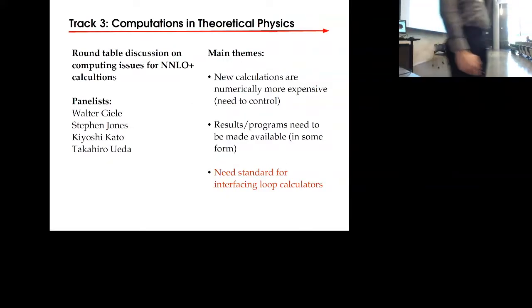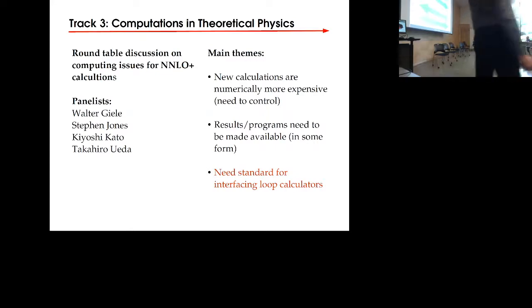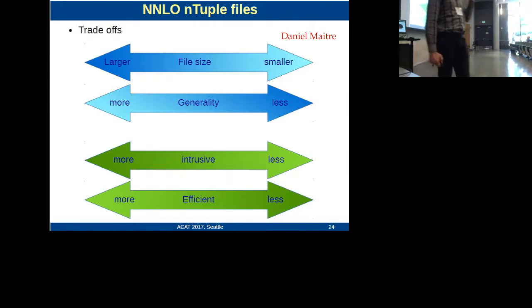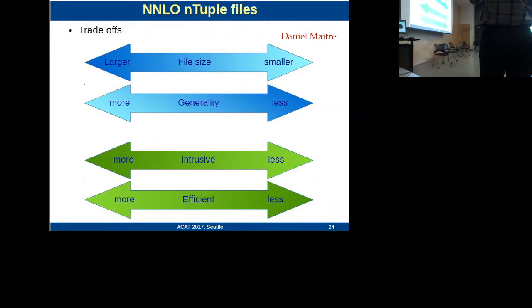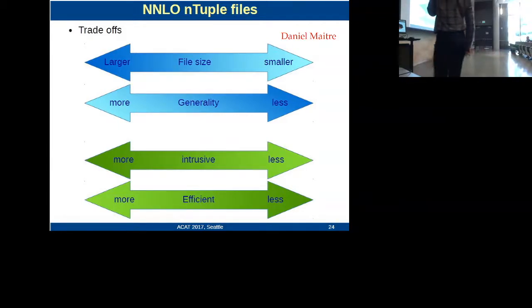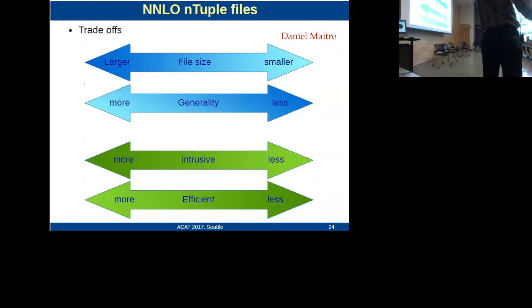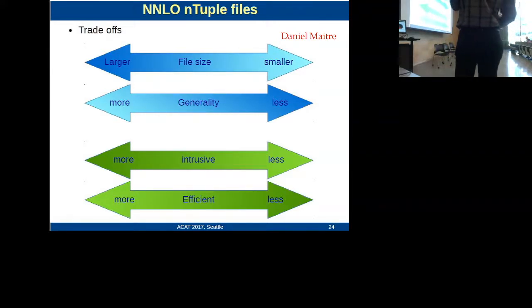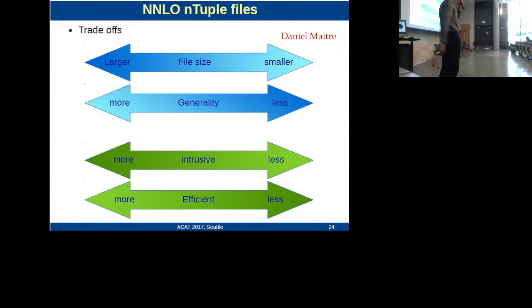And then finally, about the last aspect of needing a standard for interfacing loop calculations to, say, event generators, Daniel Maître was advocating that maybe one can use ntuple files for that. That has been done in some instances. It becomes more complicated if you really want to go to next to next to leading order or maybe beyond. In particular, if you want to put all the information in the ntuples that you might want to have, they become huge files which may be very cumbersome. In addition, they require more effort for the programming. But you can get potentially a workable result by dropping some of the information and just inferring that indirectly afterwards.